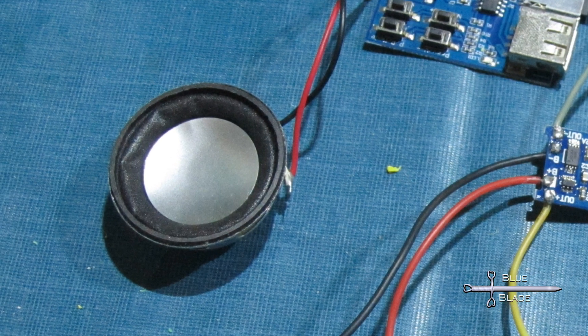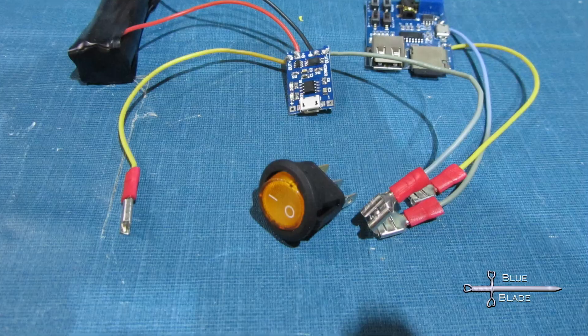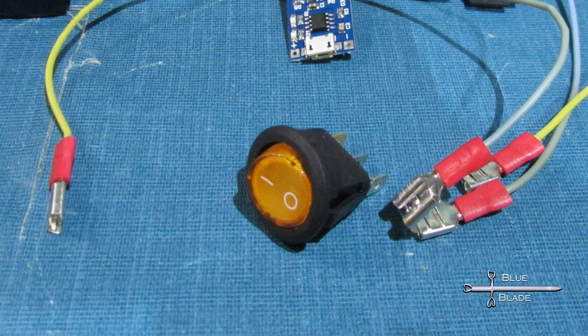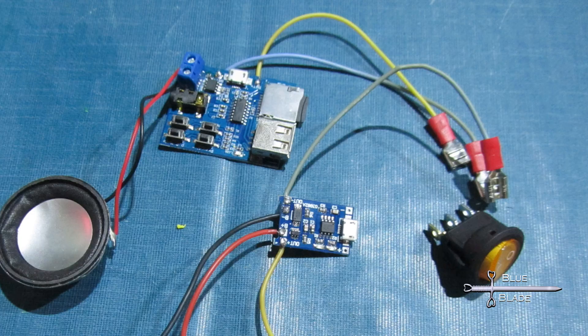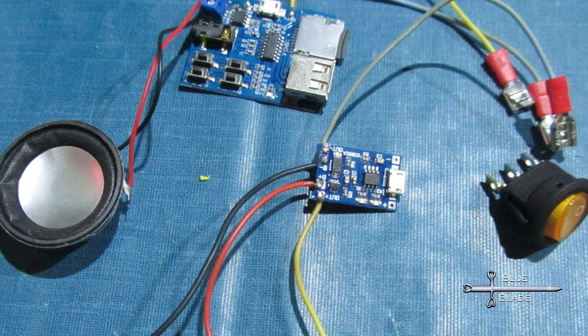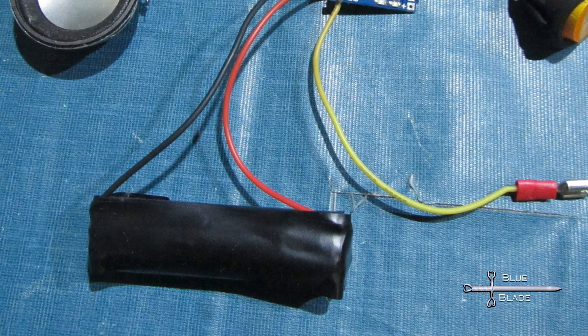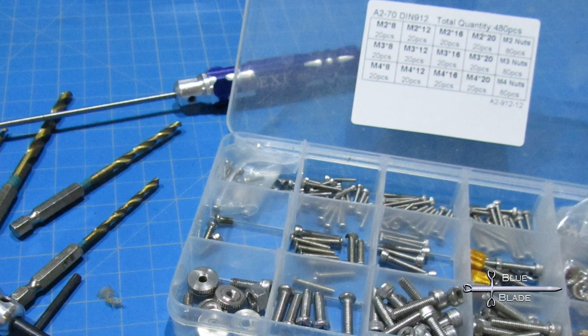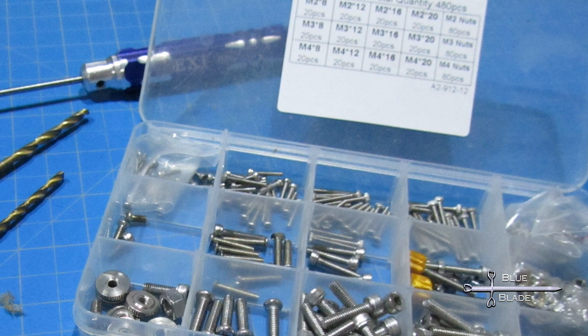A 4 ohm 3 watt 40 millimeter speaker. A round 22 millimeter LED rocker switch. Wire, spade terminals, zip ties, and 3 millimeter bolts. Eight short ones 8 to 10 millimeters and 12 longer, 14 to 16 millimeters.